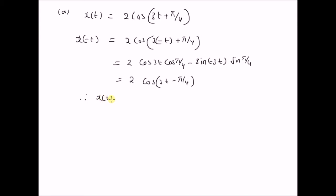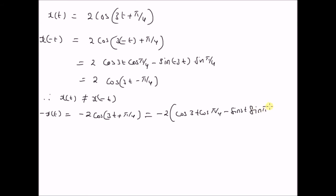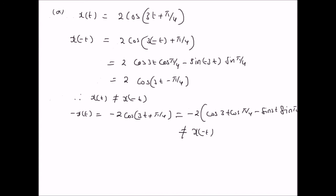Therefore, x(t) is not equal to x(−t). And −x(t) = −2cos(3t + π/4), which equals −2[cos(3t)·cos(π/4) − sin(3t)·sin(π/4)], which is clearly not equal to x(−t). Therefore, x(t) is neither even nor odd.